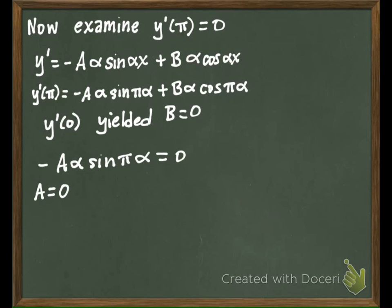So this is just going to be then negative A alpha sine pi alpha equal to zero. That means either A is zero and that's trivial so that doesn't get us anywhere, or alpha equals zero we've already dealt with that, or the only other possibility would be for sine pi alpha to be zero.